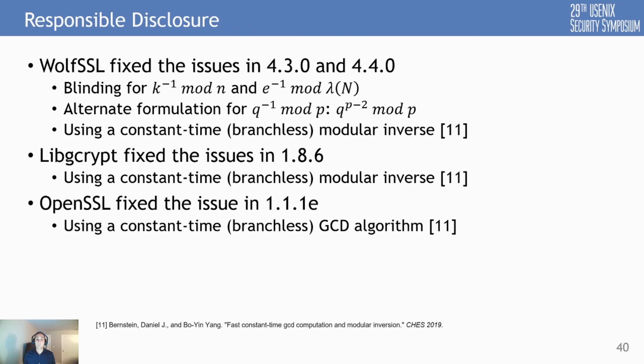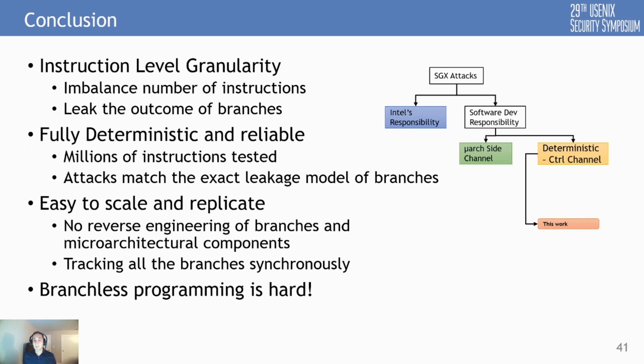As a conclusion, CopyCat pushes the limits of deterministic control channel attacks to instruction-level granularity. It is reliable and easy to scale and replicate. Constant-time programming — or in this case branchless programming — is now even harder and more important for SGX with this new attack. The question that remains for the community to answer is how to protect non-crypto programs that are data-intensive when executed inside SGX. This is the end of my talk, and I look forward to the Q&A.